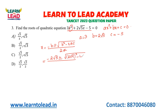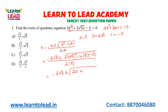Substituting: 2 root 5 squared minus 4 into 3 into minus 5, all divided by 2 into 3. That gives minus 2 root 5 plus or minus the square root of (4 into 5, which is 20, plus 60), divided by 6. This equals minus 2 root 5 plus or minus root 80, divided by 6.